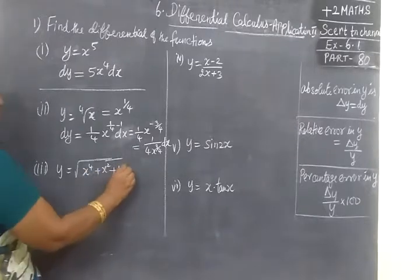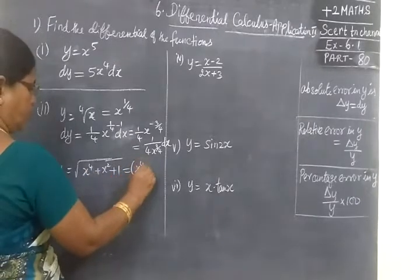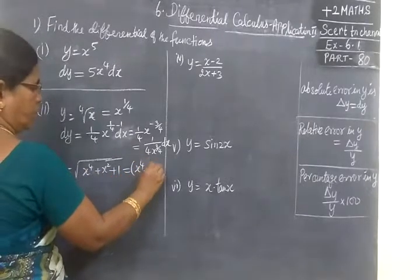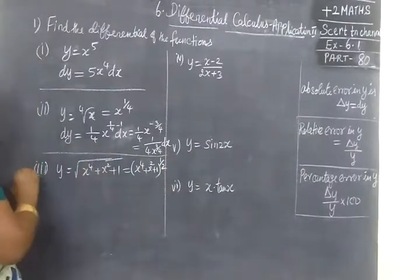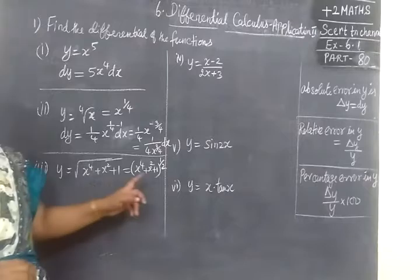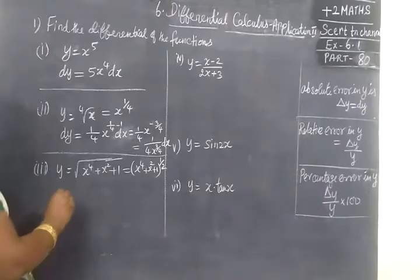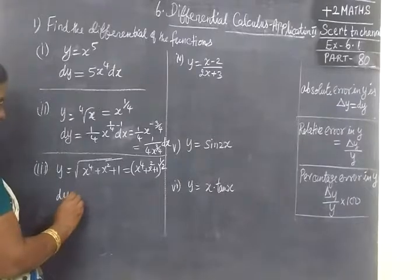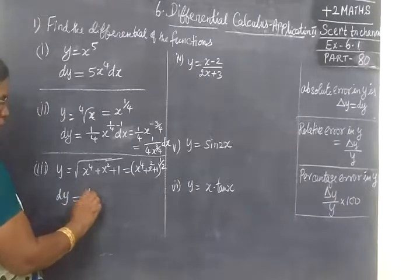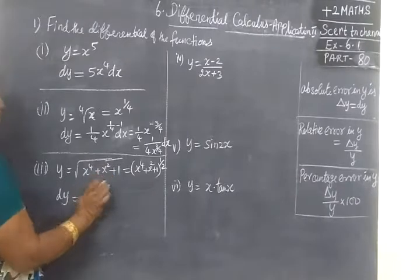Then next one is x power 4 plus x power n plus 1, power is half. Now root of x power. So root of x power n plus 1. Now find dy by dx.